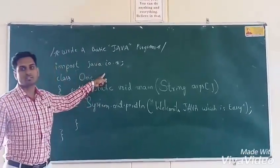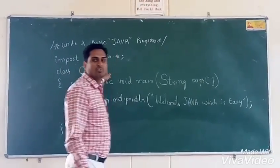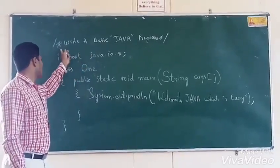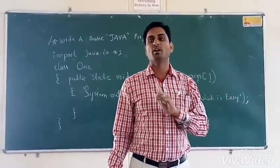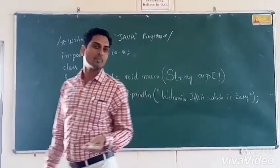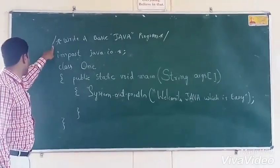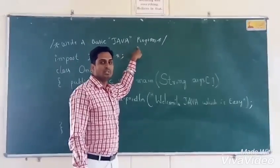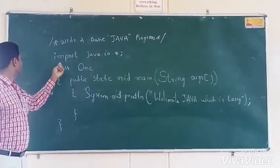This is the practical part for the Java program. Just now we discussed the theory part; now we are going to the practical part. The first basic program — the first element is a comment. A comment is a non-executable statement; the compiler will not take care of the comment, it will not consider it.